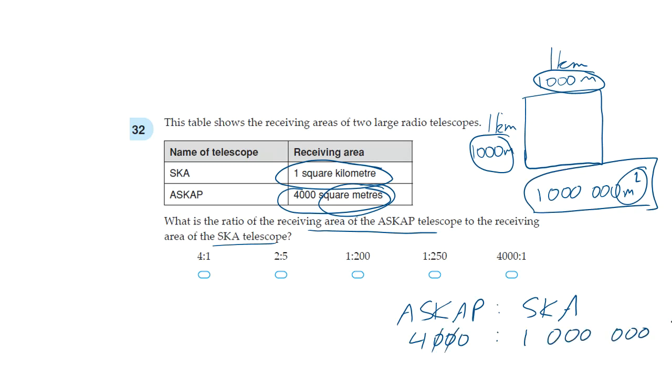Now the zeros, we can cross out three of them here. So we cross out three of them here. Now we're left with 4 and 1,000. The ratio symbol is pretty much a divide sign. So we divide this by 4 to get 1. We need to divide 1,000 by 4. And if we do that properly we'll get 250. So our answer is this one.